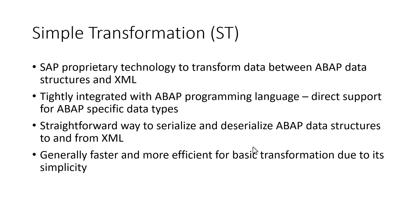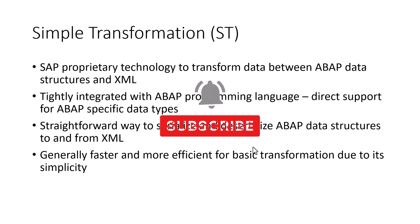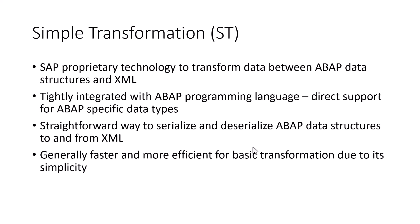The simple transformation is an SAP proprietary technology that allows you to transform data between ABAP data structures and XML. It is tightly integrated with the ABAP programming language. You can create a data type and bring it into your simple transformation XML document. This is a straightforward, very simple way to serialize and deserialize ABAP data structures, and because of its simplicity, it is generally faster. The drawback is it can only be used for simple transformations; if you need complex transformations, you would have to use XSLT.